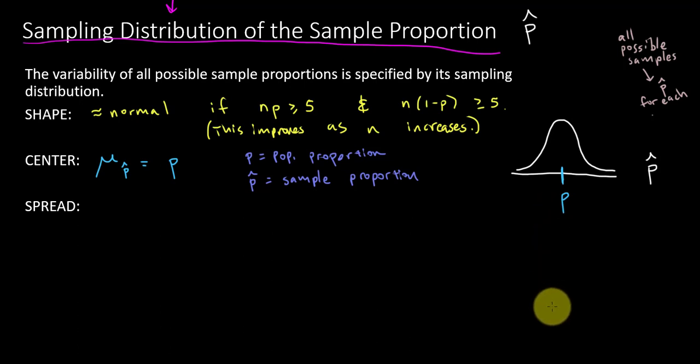The next interesting thing to ask about this normal distribution would be what is the spread of it? How can we quantify the standard deviation of the sample proportions? And when we did this with the mean, remember it was sigma over square root of n? Well, it's actually very similar to that here. But because we are working from a binomial perspective, we're based off of a binomial, the standard deviation is P times 1 minus P all over n, and then the whole thing is in the square root.